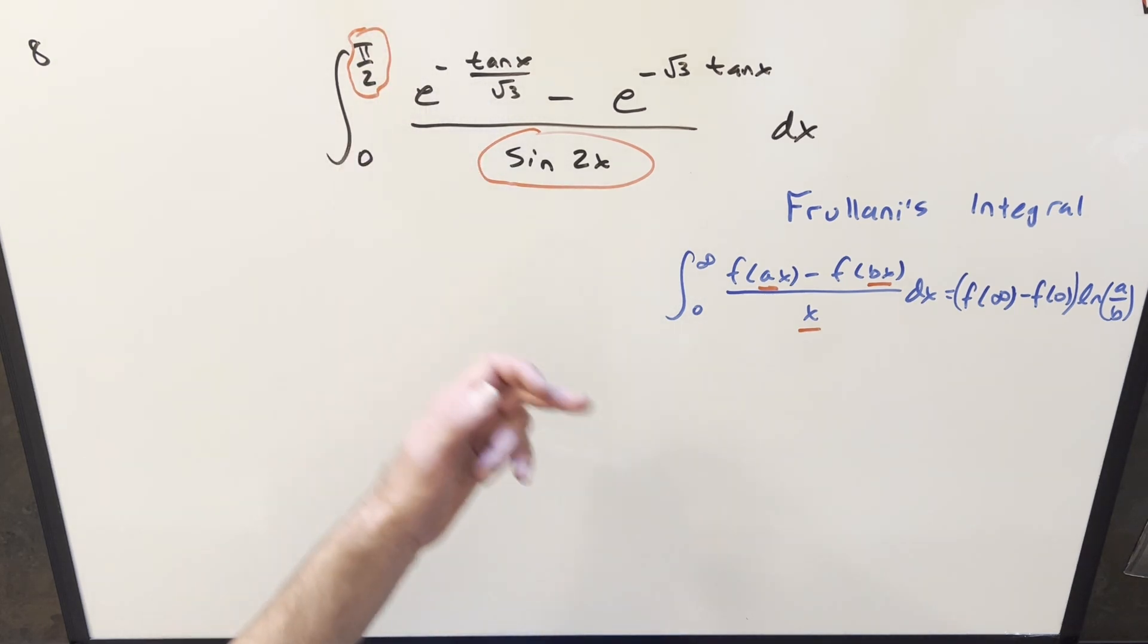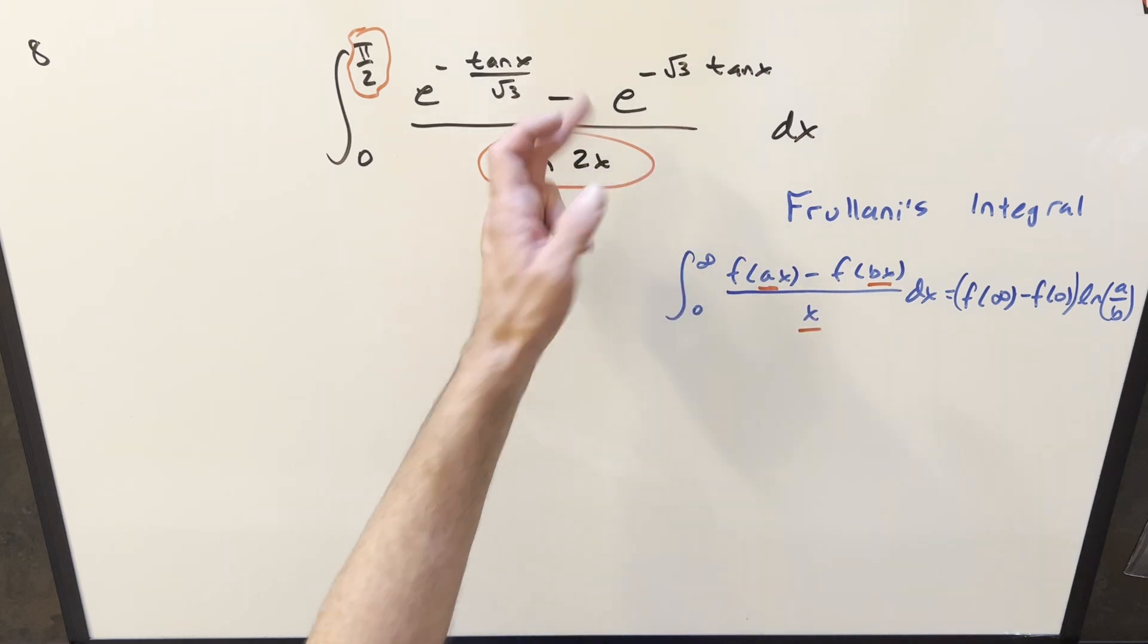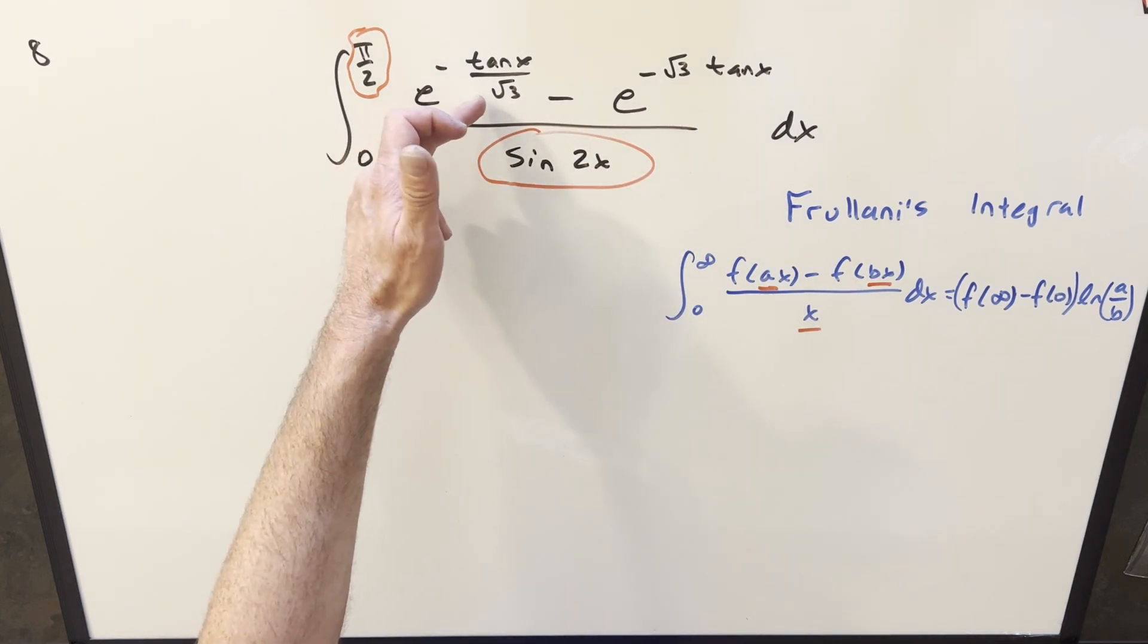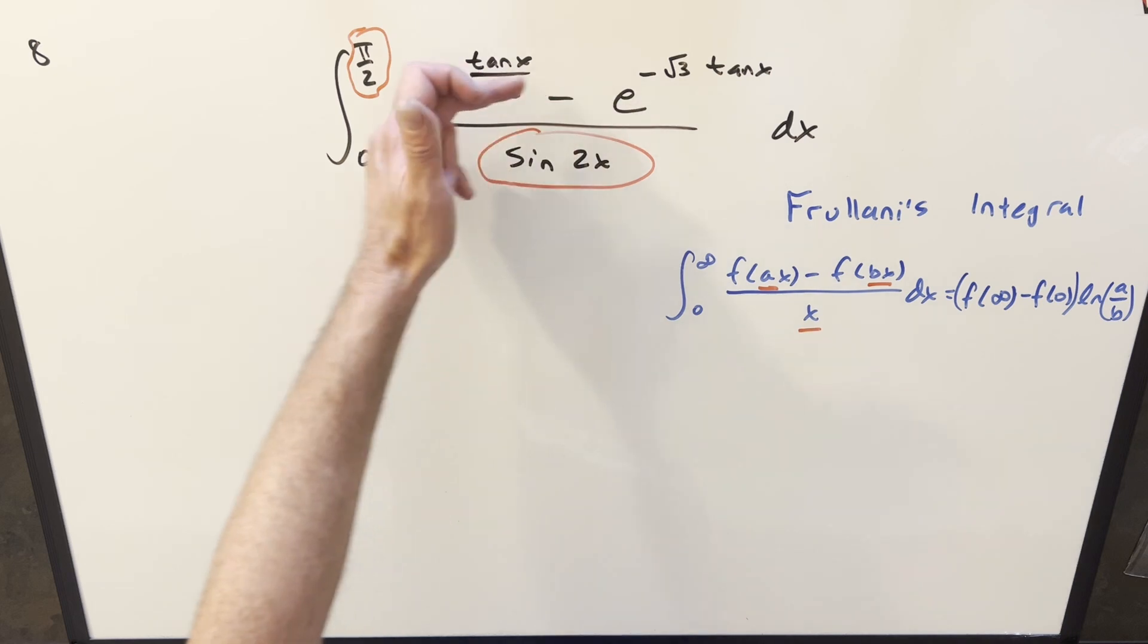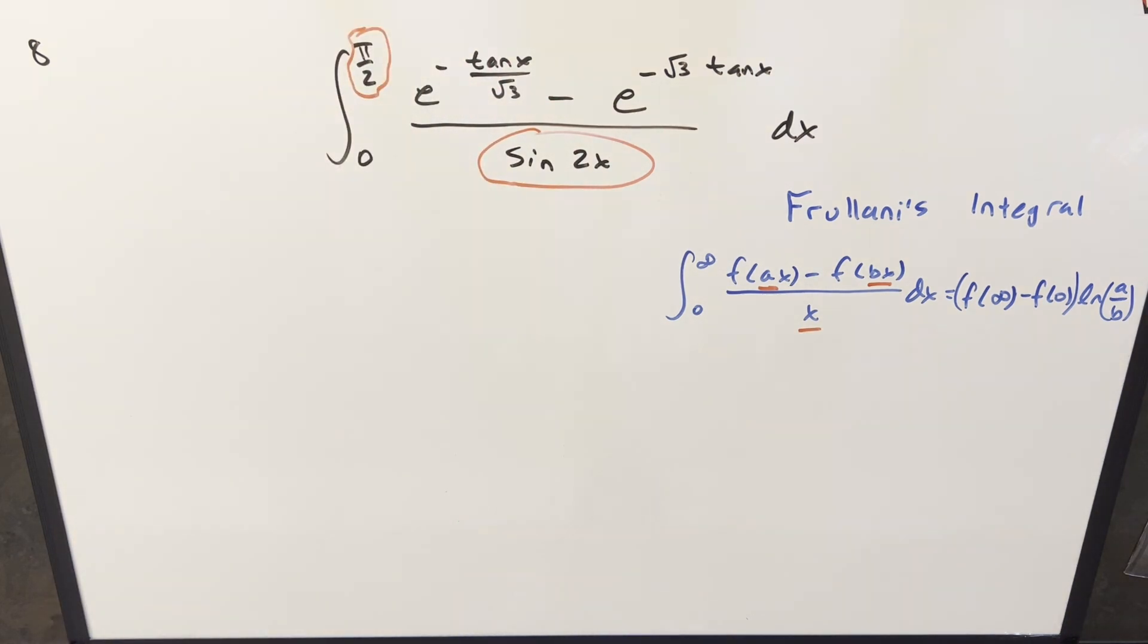And even the coefficients here, for it to be f of ax or f of bx here in the numerator, what we need is the coefficient. We need 1 over square root of 3 and square root of 3 on the x, not having a tan x here.